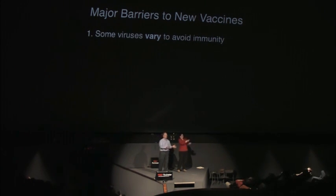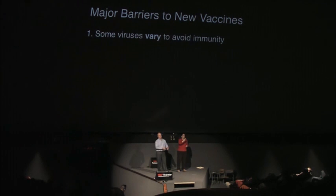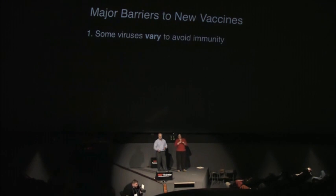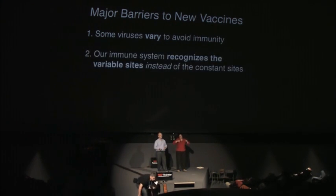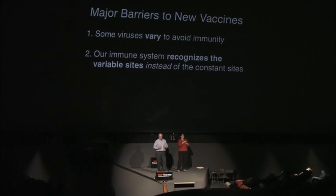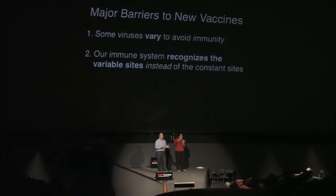You have lots of different strains of the flu, or flu that morphs or evolves and reassorts, and now it's avoiding immunity. But I think what's really the biggest problem is not the virus—it's us. Our immune system preferentially recognizes these variable sites instead of the sites that are common to all.